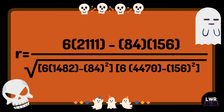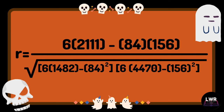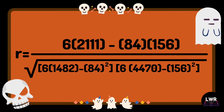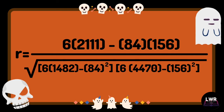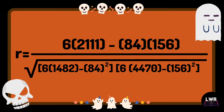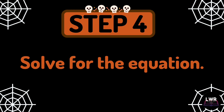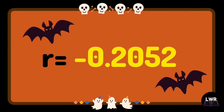All over the square root of quantity 6 times 1,482 minus 84 raised to 2, times quantity 6 times 4,470 minus 156 raised to 2. Moving on, we have step number 4: solve for the equation. The final answer is r is equal to negative 0.2052.